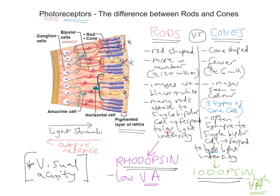So those are the key differences between rods and cones. Rods are rod-shaped, there are more of them (~120 million), images are in black and white, many rods attach to a single bipolar cell (retinal convergence) so they respond to low light intensity, they contain rhodopsin which is easily broken down in low light, but they have low visual acuity. Cones are fewer (~6 million), there are three types so images are in colour, they often synapse to a single bipolar cell so they respond to high light intensity, they contain iodopsin which needs high light intensity to break down, but they have far better visual acuity because adjacent cones produce separate impulses, each connected to their own single bipolar cell.